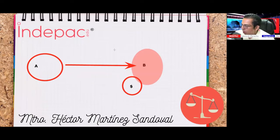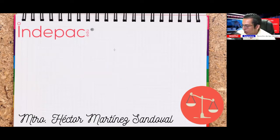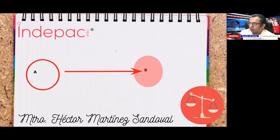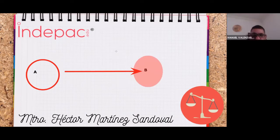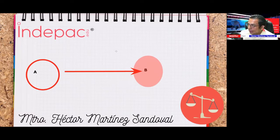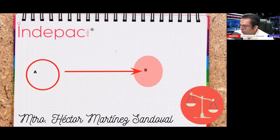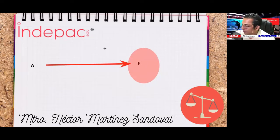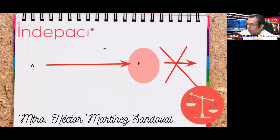Celebro un arrendamiento con Francisco Javier. Yo soy el arrendador, Francisco es el arrendatario. Le digo a Francisco: sobre este departamento que te estoy rentando, tú no lo puedes rentar a terceros. ¿Qué otra modalidad le estoy dando? La de no hacer.